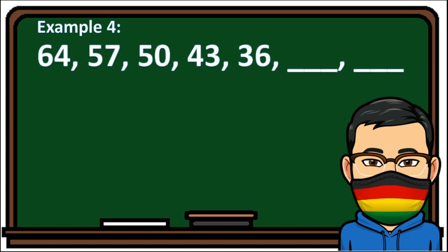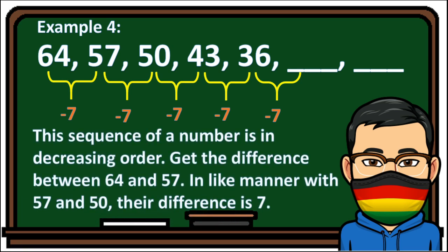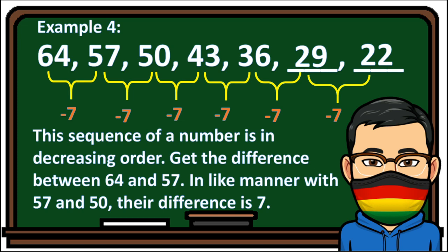Example 4. The given sequence is 64, 57, 50, 43, 36. Find the next two numbers in the sequence. If you subtract 7 from 64, you get 57. Then 57 minus 7 equals 50, 50 minus 7 equals 43, and 43 minus 7 equals 36. This sequence is in decreasing order with a difference of 7. So 36 minus 7 equals 29, and 29 minus 7 equals 22. The missing numbers are 29 and 22.